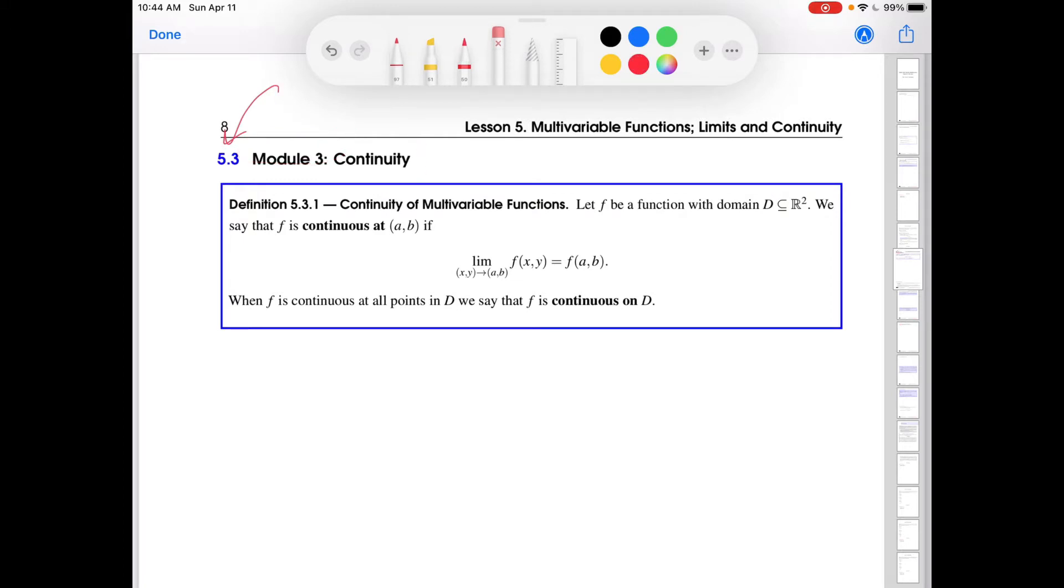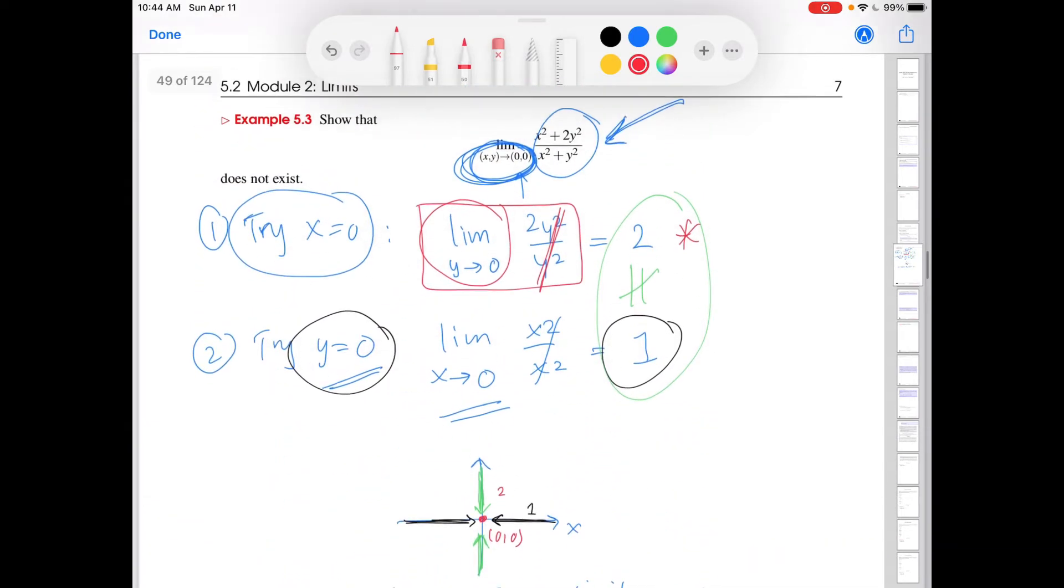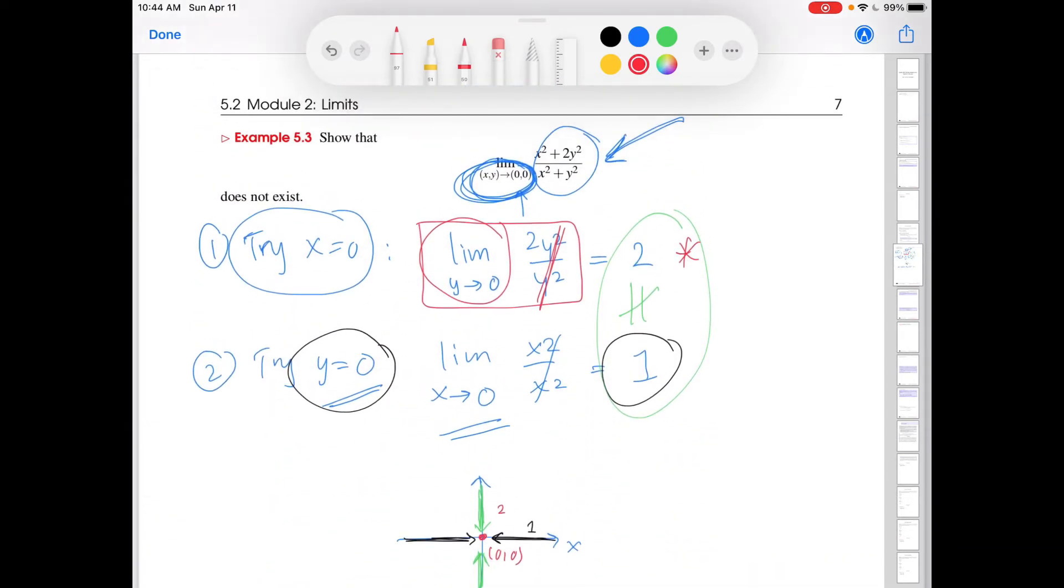We talked in the previous video a lot about limits, and in general the takeaway was that for most of the work that we will do, especially in this course and most multivariable calculus courses, we don't spend too much time calculating limits in the multivariable context because of the difficulties in doing so analytically. We spend much more time calculating or showing that limits don't exist.